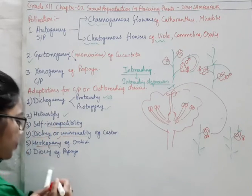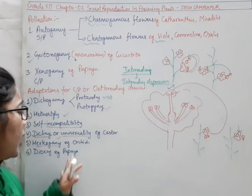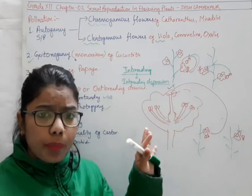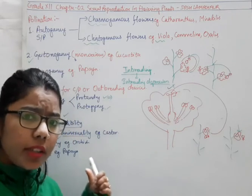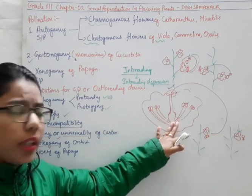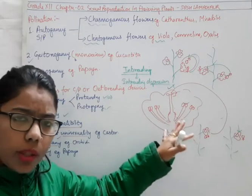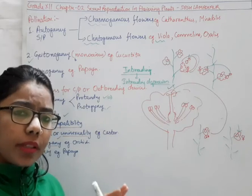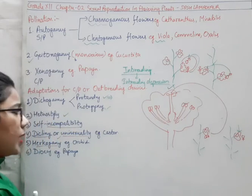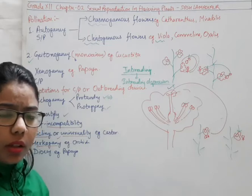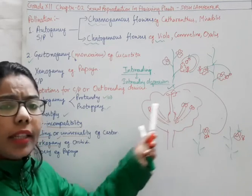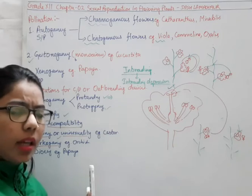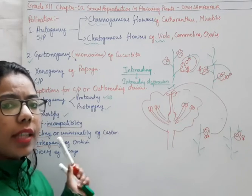Now comes herkogamy. Herkogamy means that in case of orchids, you can see that the morphology or structure will get changed if there will be pollination between the same flower. These types of flowers change their anatomy, and due to that there will be no compatibility between the pollen grains and the stigma — it fails the self-pollination.